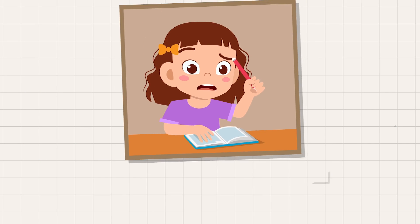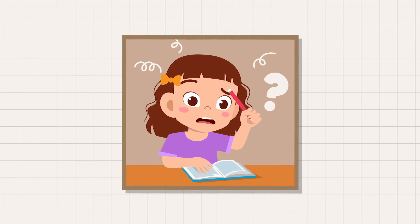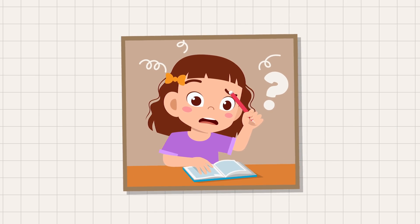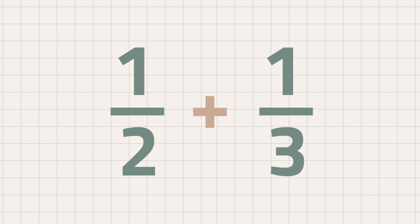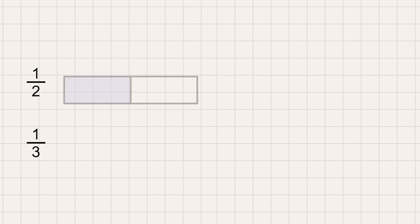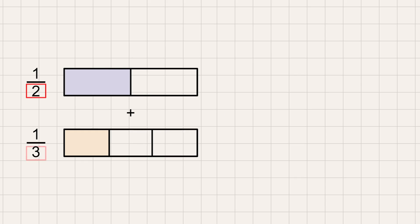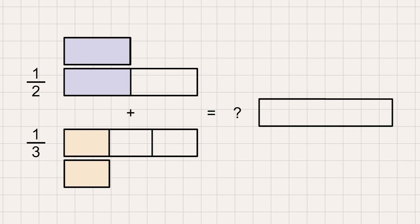But what if the denominators are not the same? How can we add unlike fractions? Let's take a look at the fractions one-half and one-third. These two fractions have different denominators. We cannot just simply add different denominators since the parts have different sizes. So, what do we do?